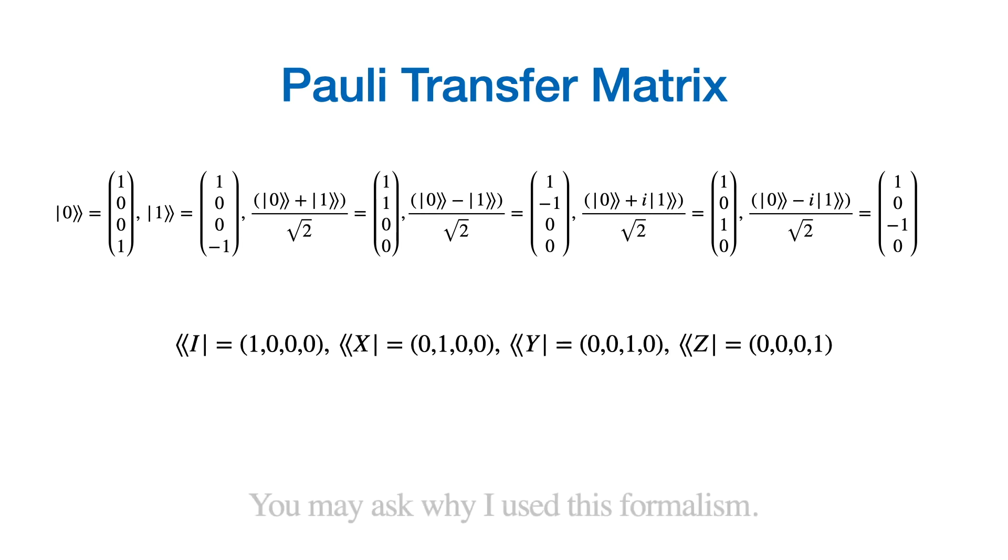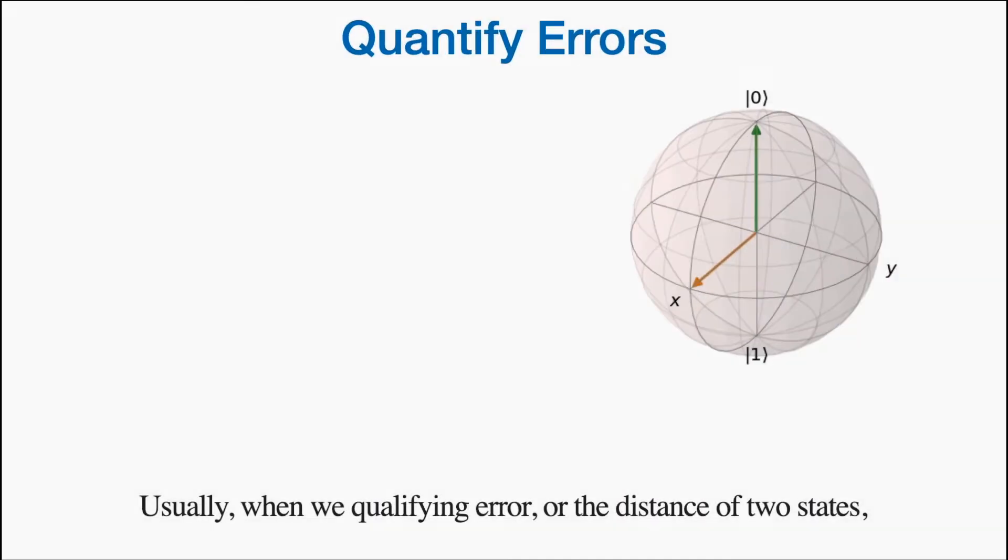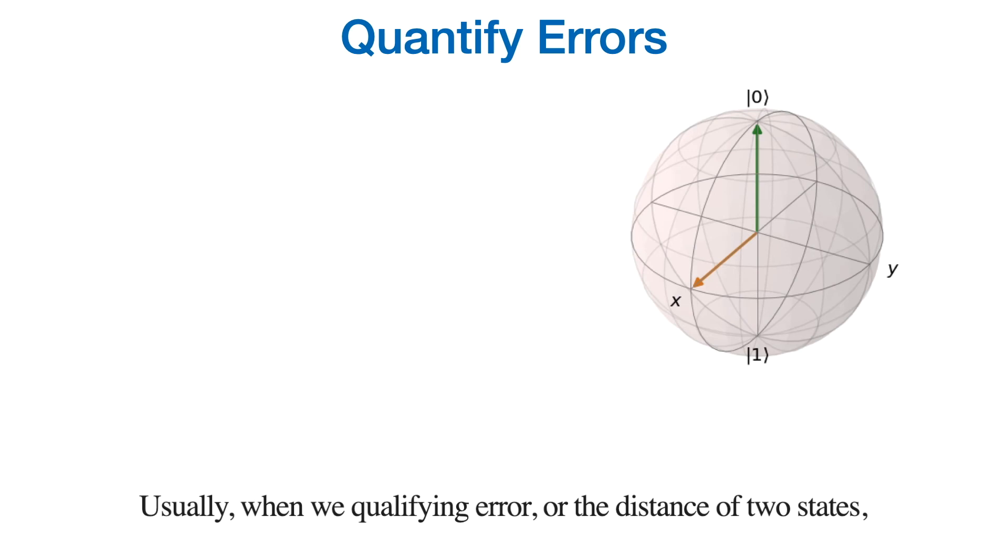Usually, when we quantify an error or the distance of two states, we use fidelity. It is simple and clear. Why we took trouble to use more complicated things? Think about this.